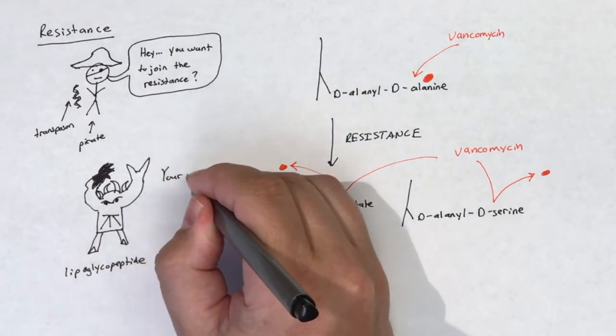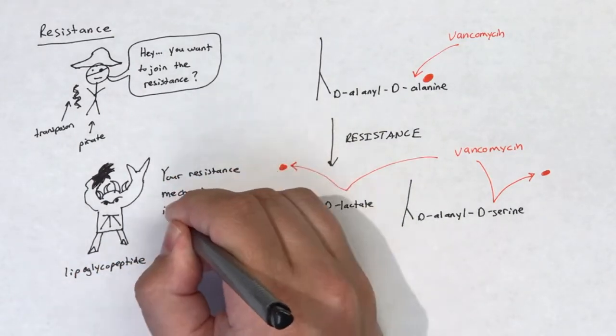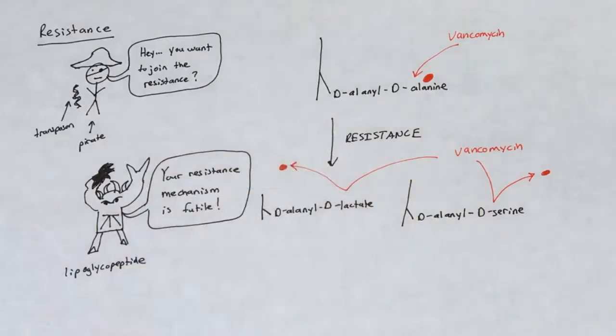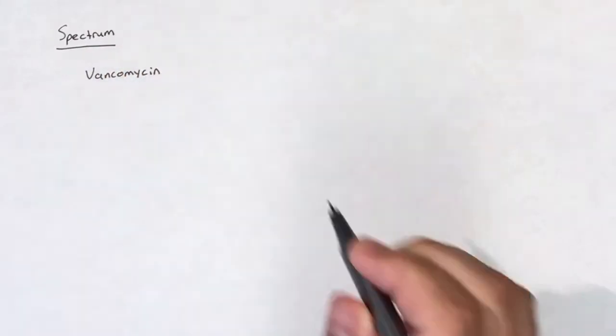The glycopeptide vancomycin is active against many gram-positive bacteria, including ampicillin-resistant enterococci, penicillin-resistant streptococci, and methicillin-resistant S. aureus or MRSA.